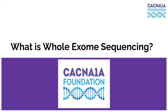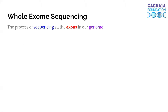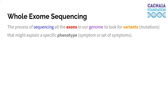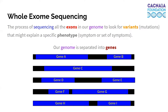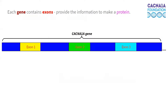So let's get back to the question of what whole exome sequencing is now that we know a little bit more about DNA. Whole exome sequencing is the process of sequencing all of the exons in our genome to look for those variants that might explain a specific phenotype — a symptom or set of symptoms that someone is exhibiting. So what's an exon? Well, our genome is all of the DNA inside of our cells, and our genome is further separated into smaller subunits called genes. Those genes in turn are separated into even smaller subunits called exons. It's these exons inside the genes that provide the information to make a protein. Exons only make up one to two percent of our entire genome, but many genetic diseases have been linked to variants in these exons, which is why we tend to focus on them.